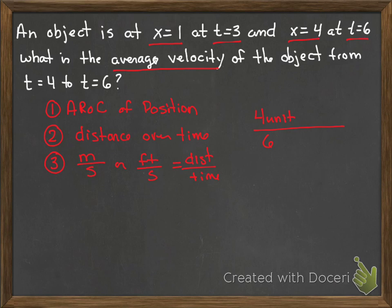So we're really just looking at average rate of change, or some kind of distance over time. 4 minus 1 is 3, 6 minus 3 is also 3.